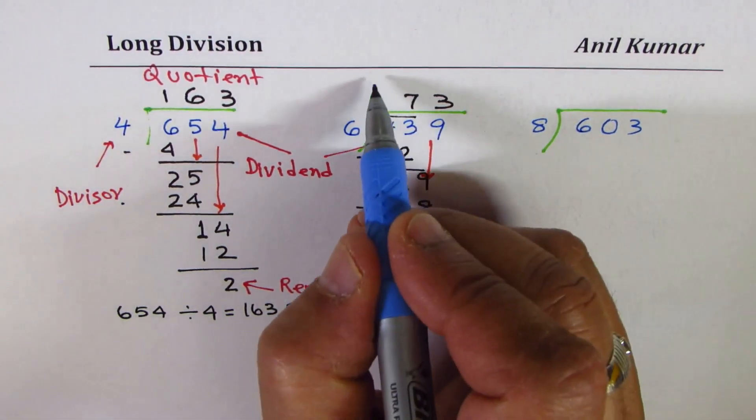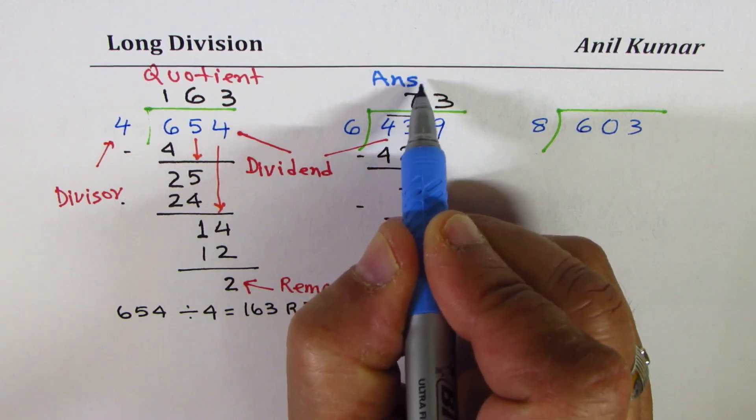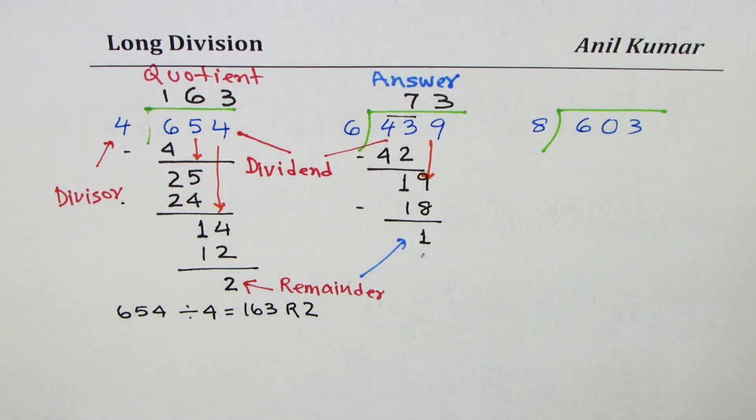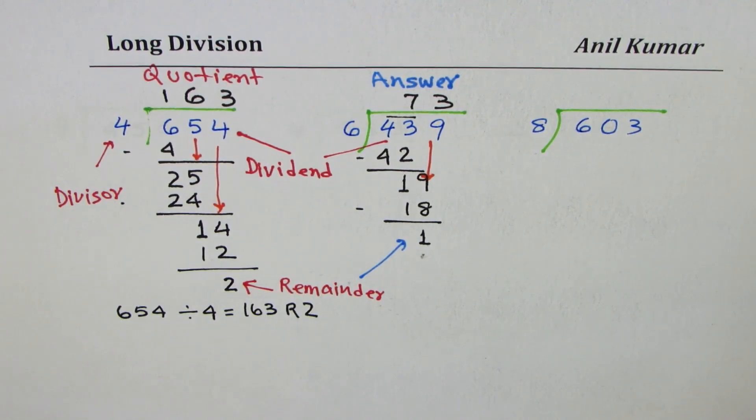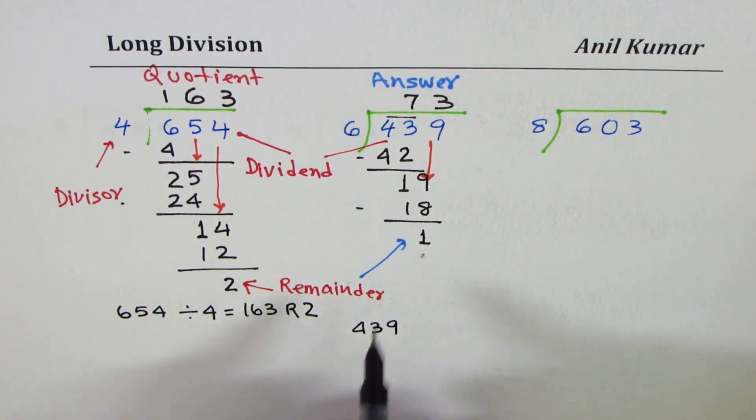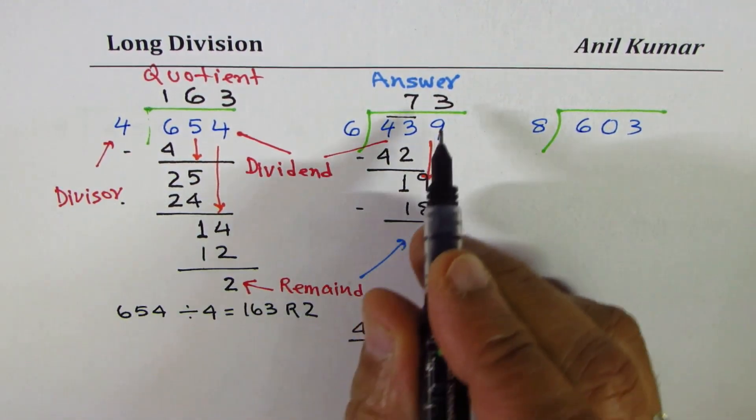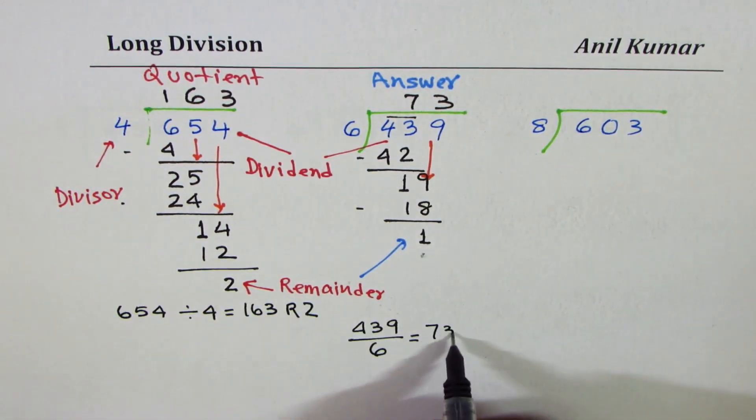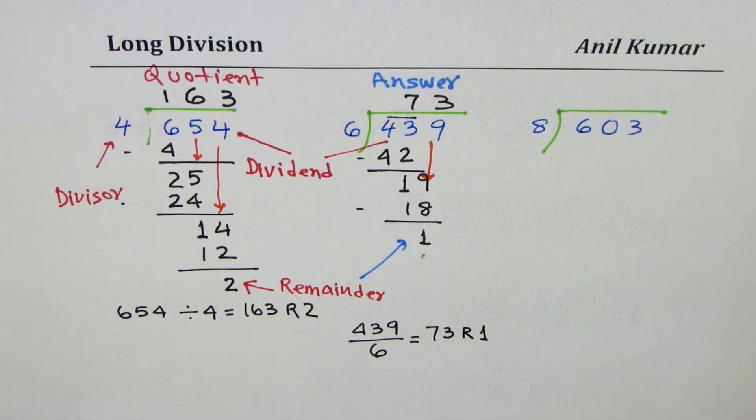This quotient is also treated as answer. Sometimes you may have to write down the answer to the nearest decimal, so you can round. Let's write down this solution, which is 439 divided by 6 is equal to 73 remainder 1.